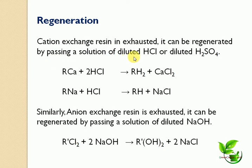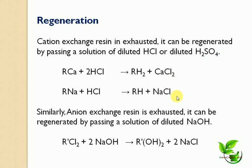The exhausted cationic exchange resin is regenerated by passing diluted hydrochloric acid or diluted sulfuric acid through it. For example, RCa + 2HCl → RH₂ + CaCl₂, and RNa + HCl → RH + NaCl, restoring the resin. Similarly, the exhausted anionic exchange resin is regenerated by passing diluted sodium hydroxide: RCl₂ + 2NaOH → R(OH)₂ + 2NaCl. Both cationic and anionic resins are thus regenerated for reuse.